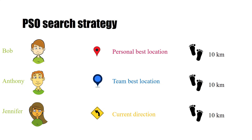And finally, rule number three: each team member knows his or her current travel direction. They might start with a random direction, but they need to know the current direction because they're going to use it to find the next location.